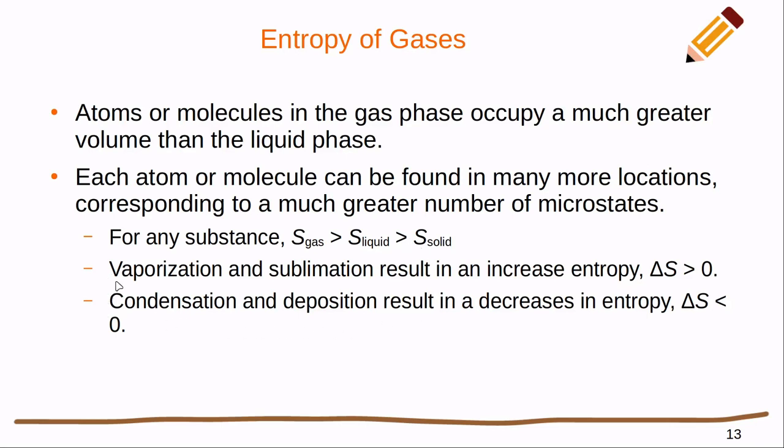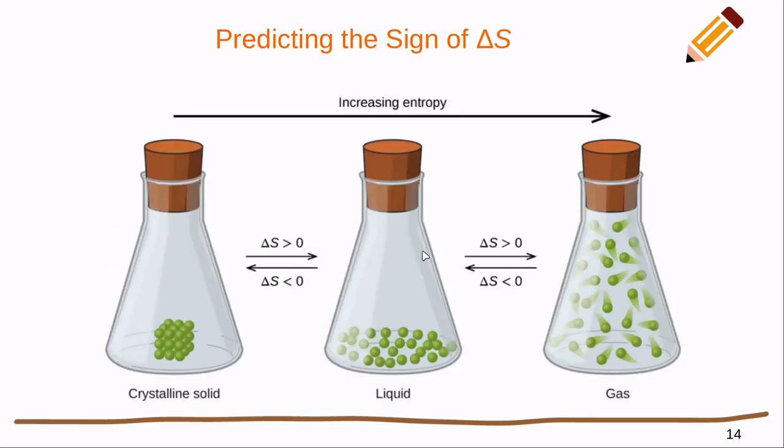If we start to consider these various transitions that we can have, for instance, vaporization or sublimation, where we're going from a liquid to a gas or a solid to a gas, is going to have an increase in entropy. Condensation and deposition, where we're going from a gas to a liquid or a gas to a solid, is going to result in a decrease in entropy. That's all summed up pretty nicely with this imagery. As we move from a crystalline solid to a gas, we have increasing entropy. We can predict the sign of each one of these different transitions.